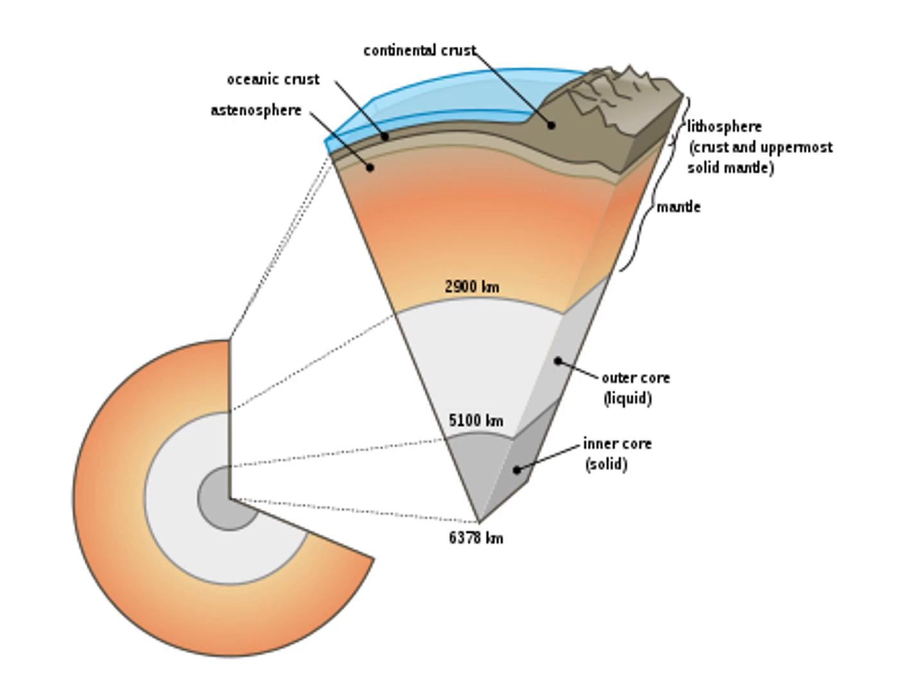There is a boundary between the liquid and solid part which is known as the asthenosphere — basically the boundary between the lower mantle and the upper mantle. The core of the Earth is also divided into two parts: the outer core and the inner core.